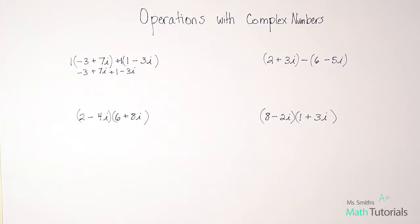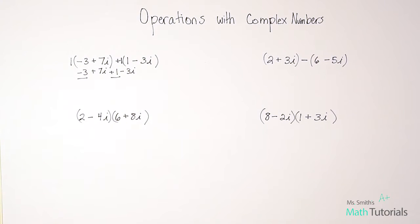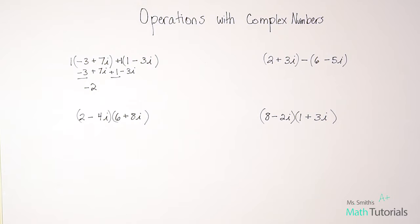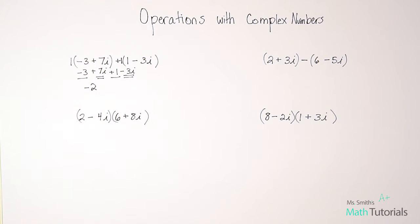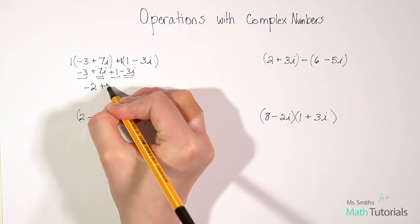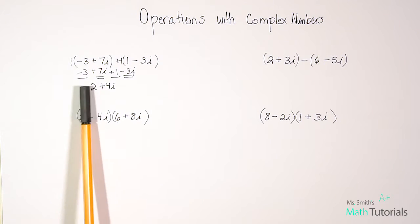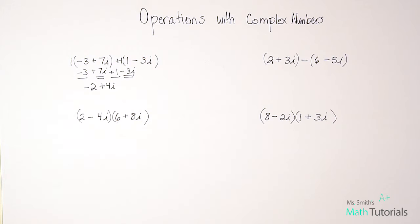So I just rewrote it without the parentheses. At this point we just want to look for like terms. For my constants I have negative 3 and positive 1, so negative 3 plus 1 gives us negative 2. And then I have like terms 7i minus 3i, which gives us positive 4i. So our answer is negative 2 plus 4i. I like to write the constant first and then the imaginary part second, but go with the order your teacher prefers. Addition is pretty straightforward.